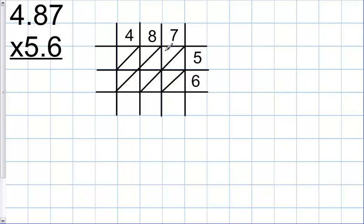Just like regular lattice, I'm going to multiply. 7 times 5 is 35, 7 times 6 is 42, 8 times 6 is 48, 4 times 6 is 24, 8 times 5 is 40, and 4 times 5 is 20.